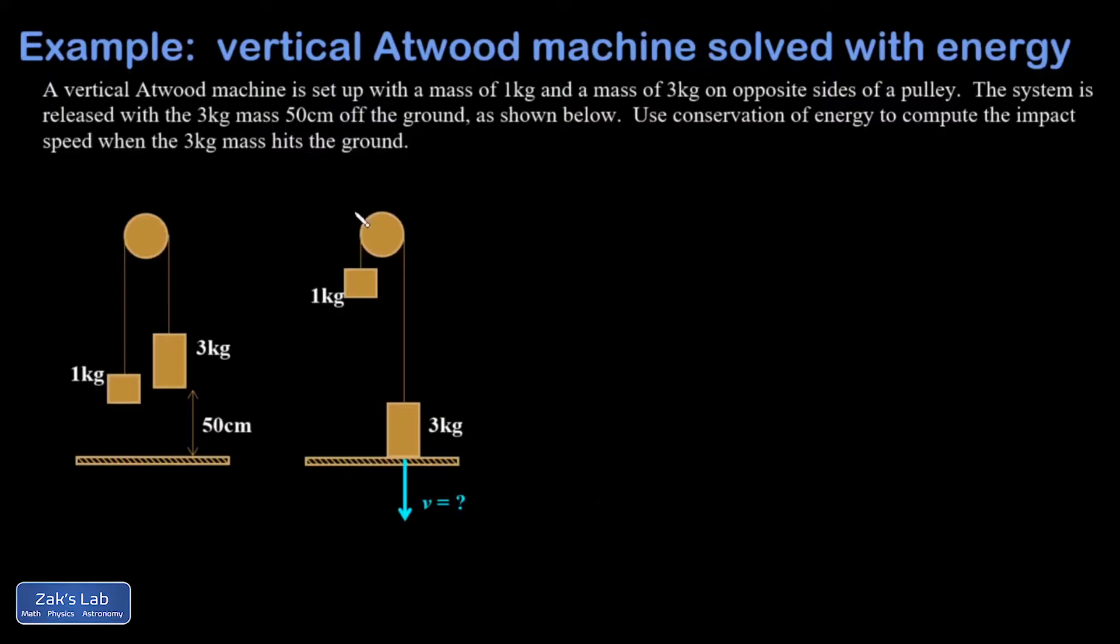So one thing I want to get in here before we do anything is that that one kilogram mass is moving at exactly the same speed as the three kilogram mass because they're tied together with a string that presumably can't stretch. So they're always moving at the same speed. In other words, this guy has kinetic energy, and that's a really common mistake to forget the kinetic energy of the second piece.